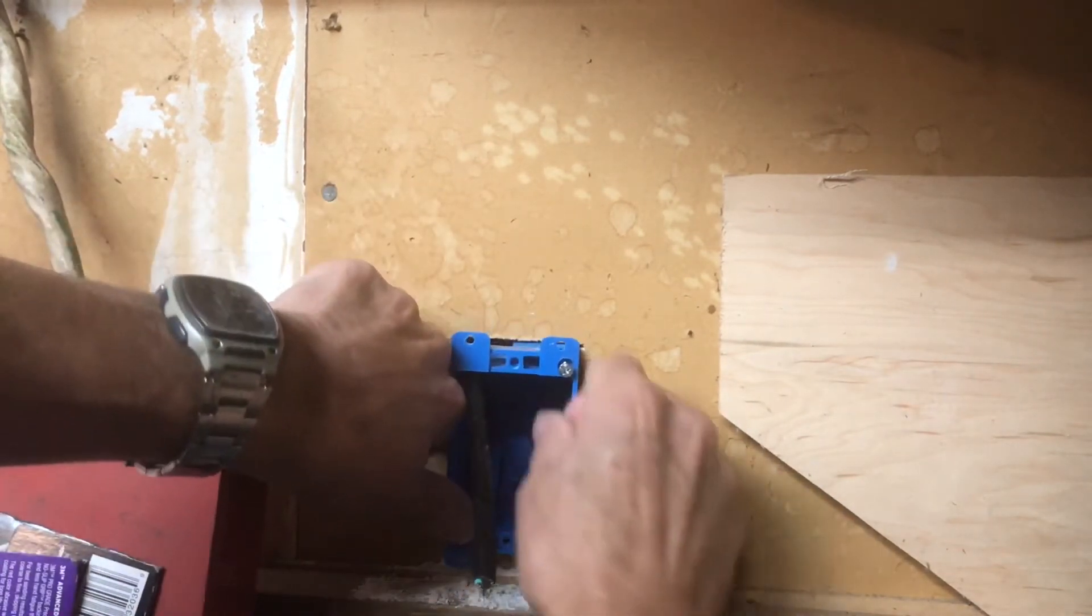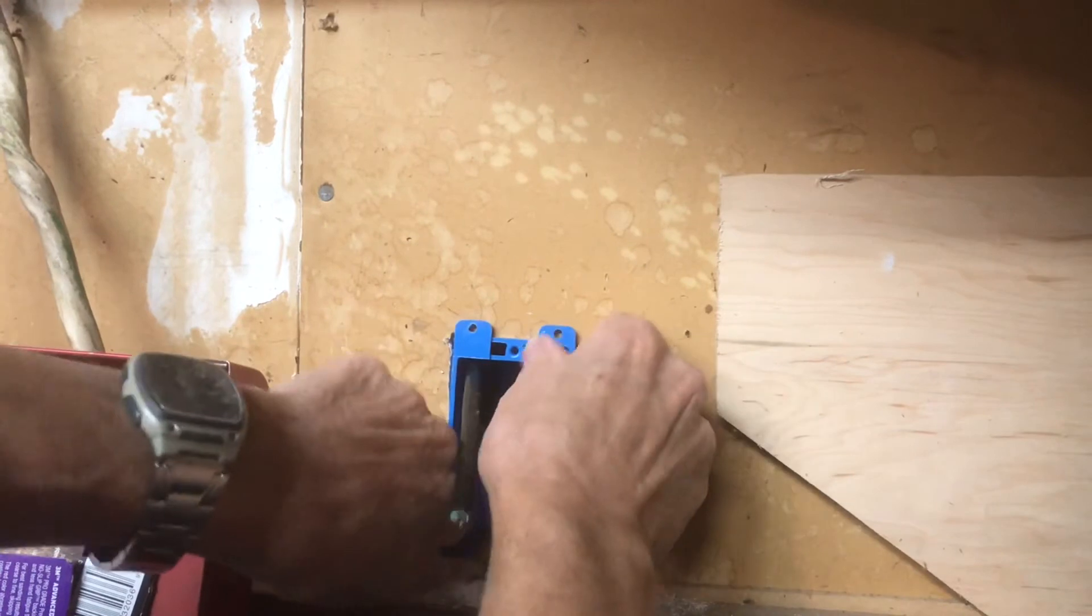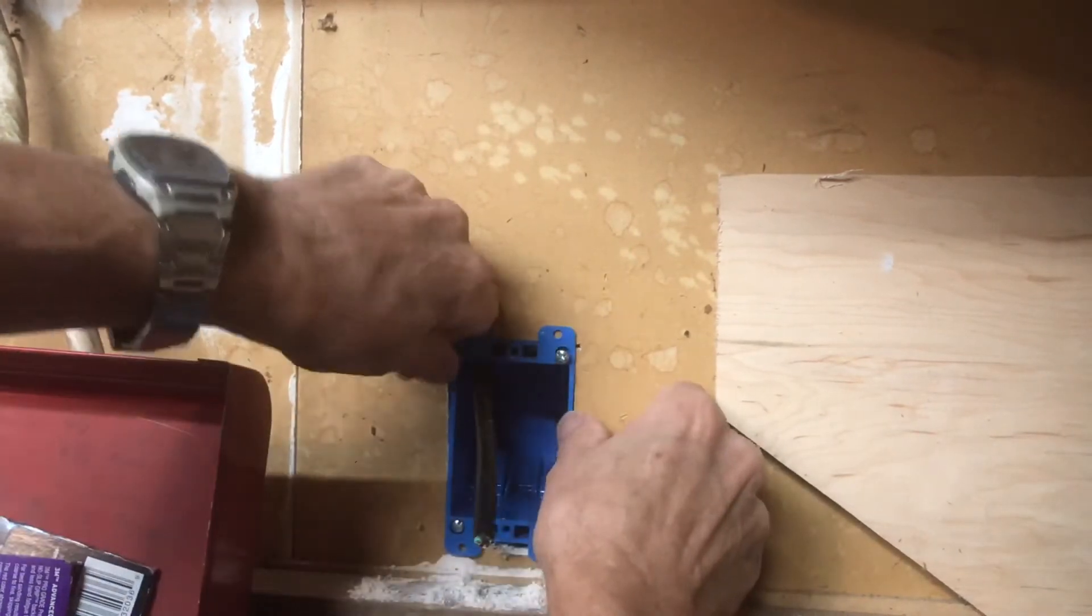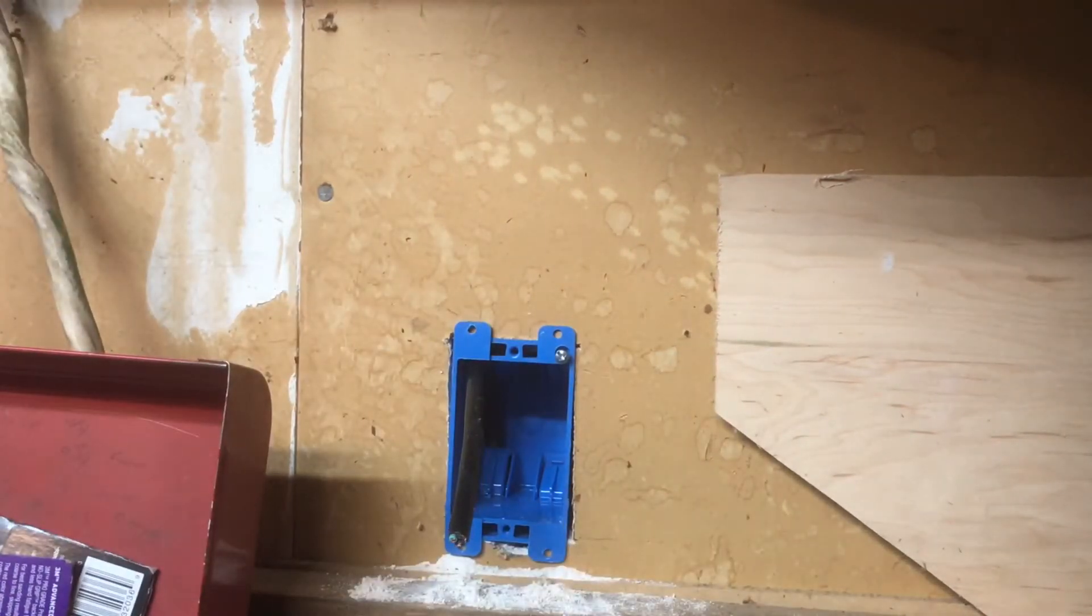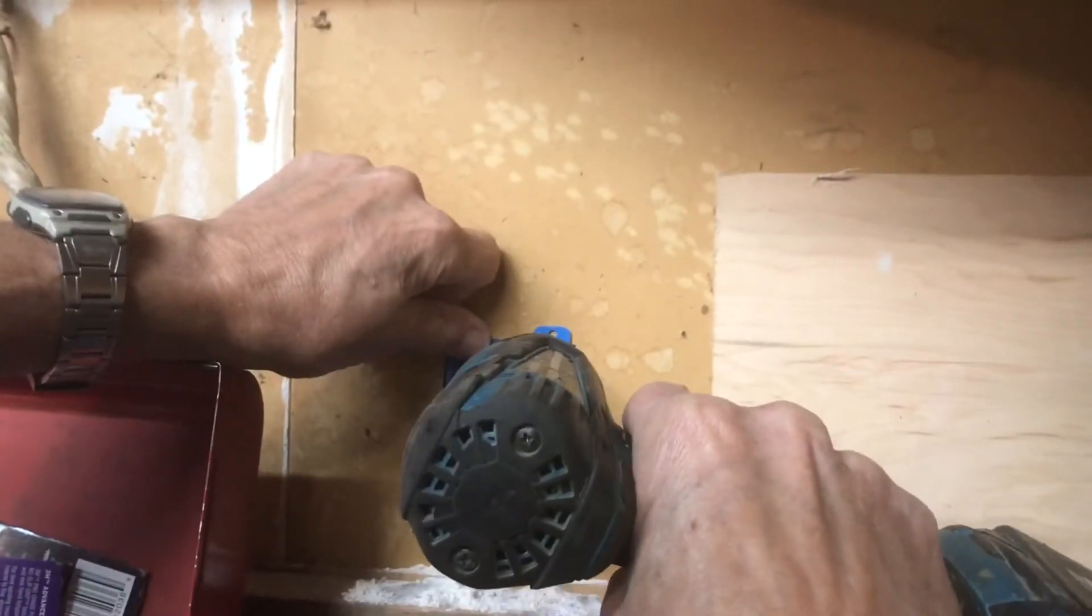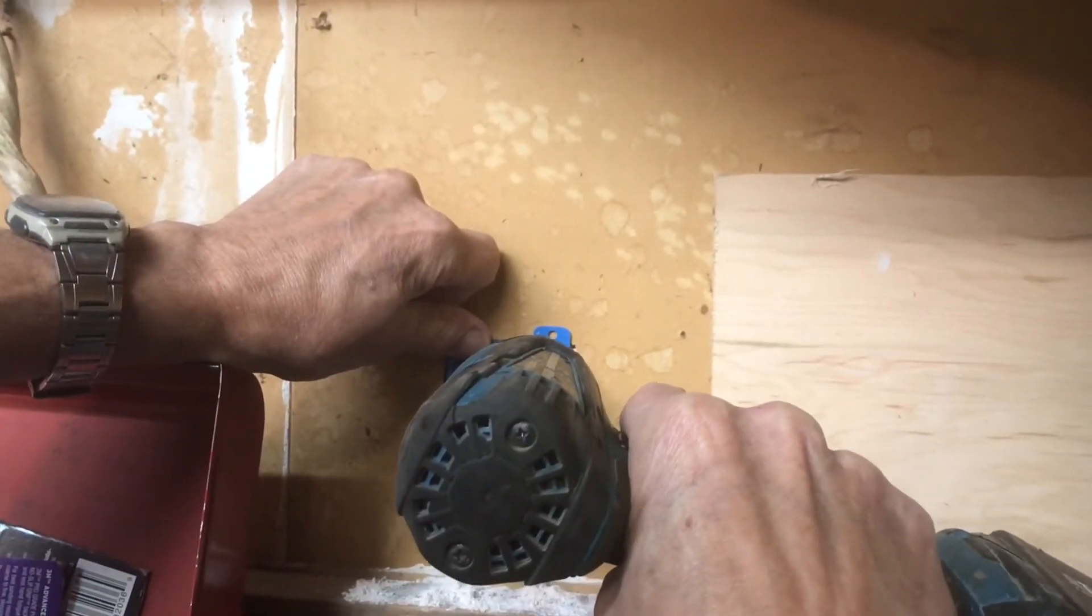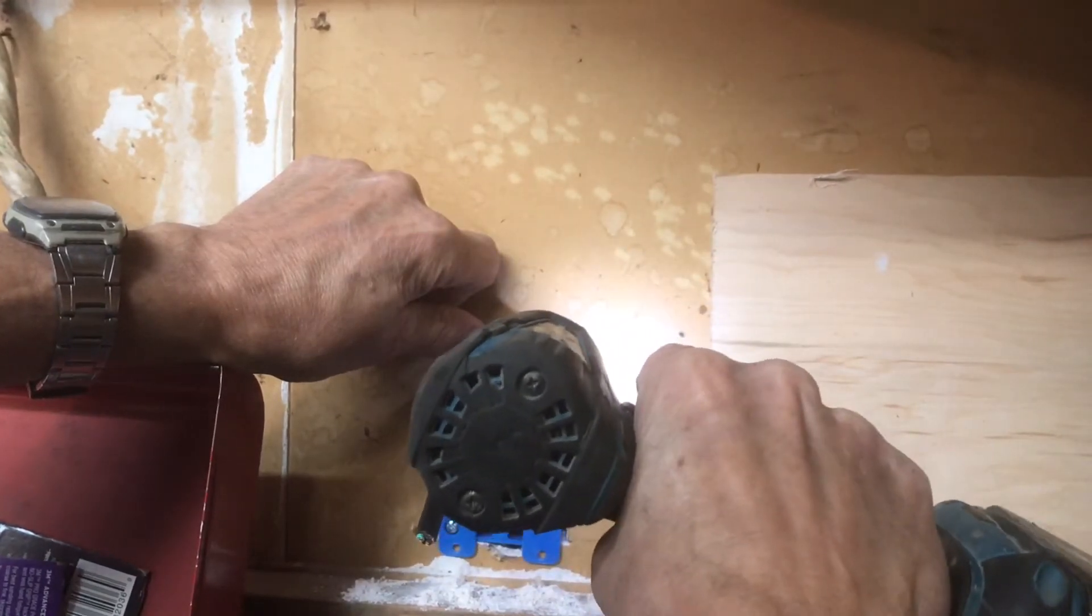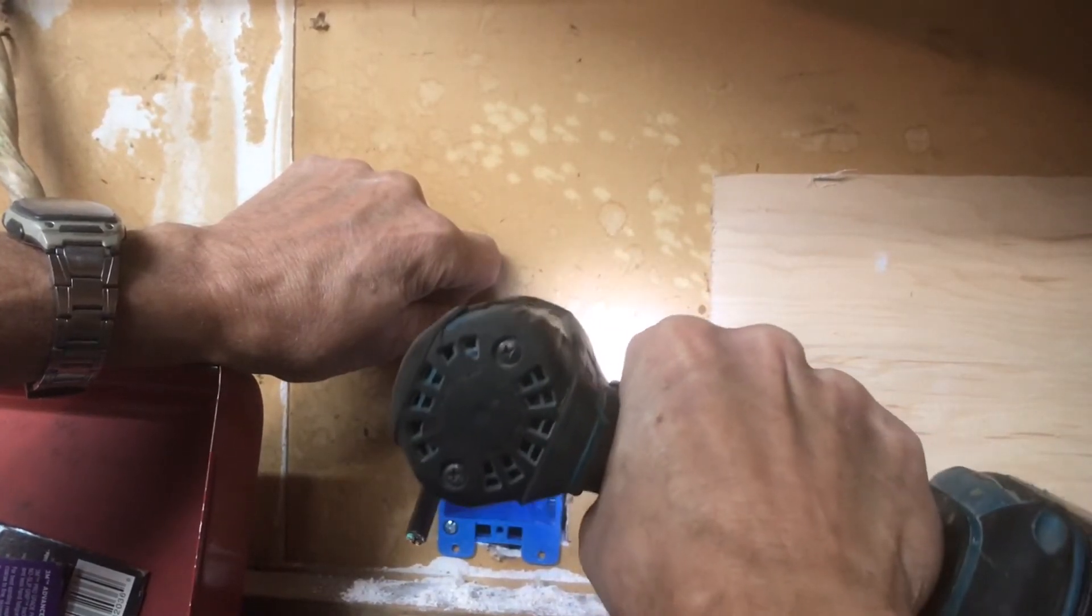After we get the box in the hole then it's time to get our drill or cordless screwdriver with a Phillips on the end and you snug that up so that flap will grab the back end of that sheetrock and hold the box in the wall.